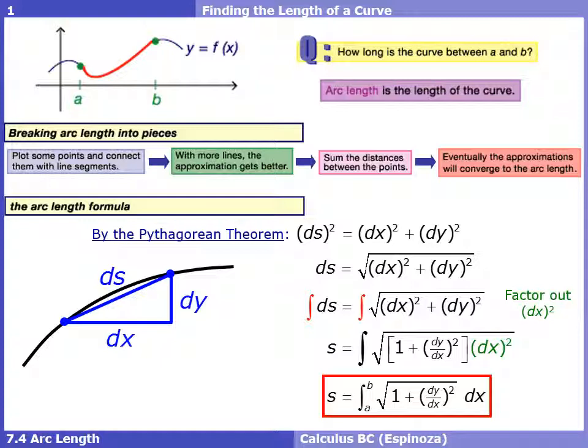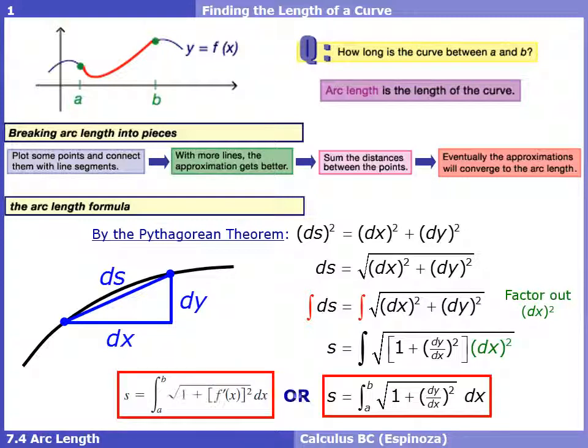To find the length of an arc, which we call S, we need to integrate from one point to another using this formula. All it involves is finding the derivative of your function, squaring it, adding one, and then taking the square root. Since we can write derivatives in various notations, another way you might see this is instead of (dy/dx)², you could see f'(x)². Ultimately, this is just the formula we're going to apply to find the length of an arc.